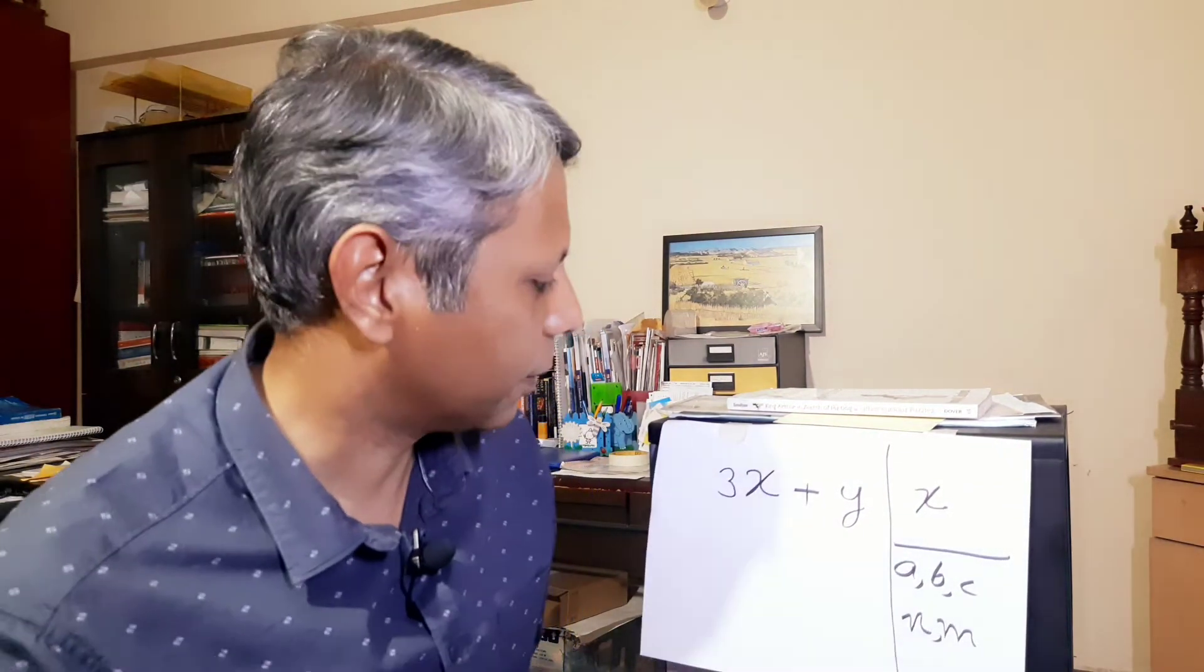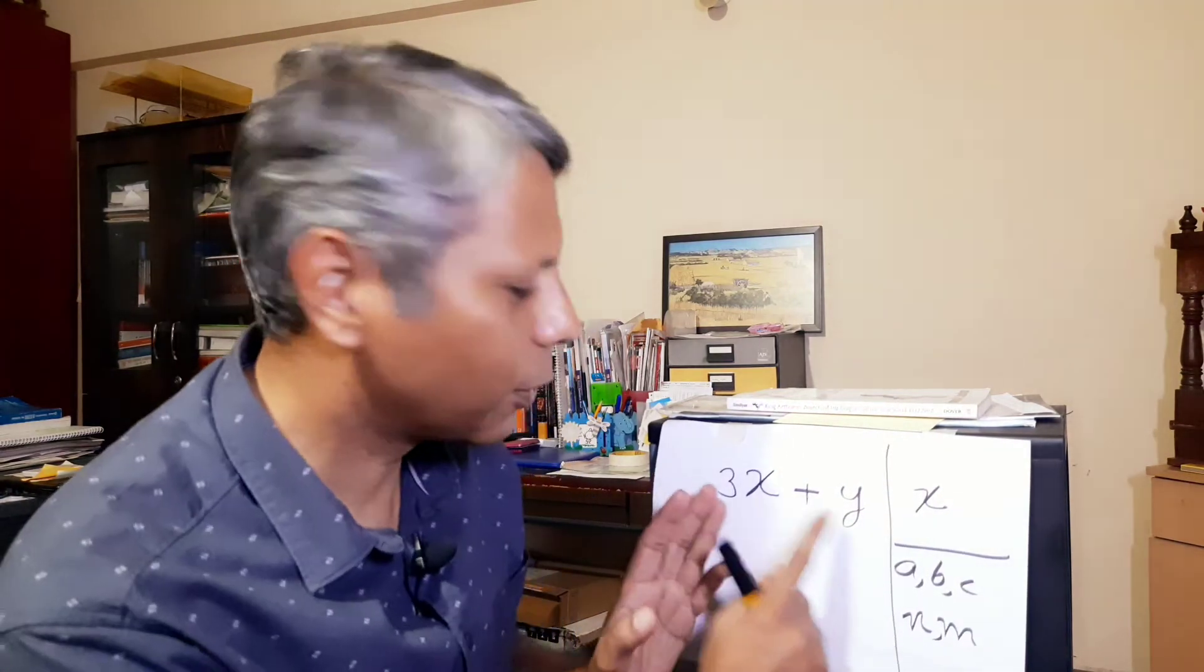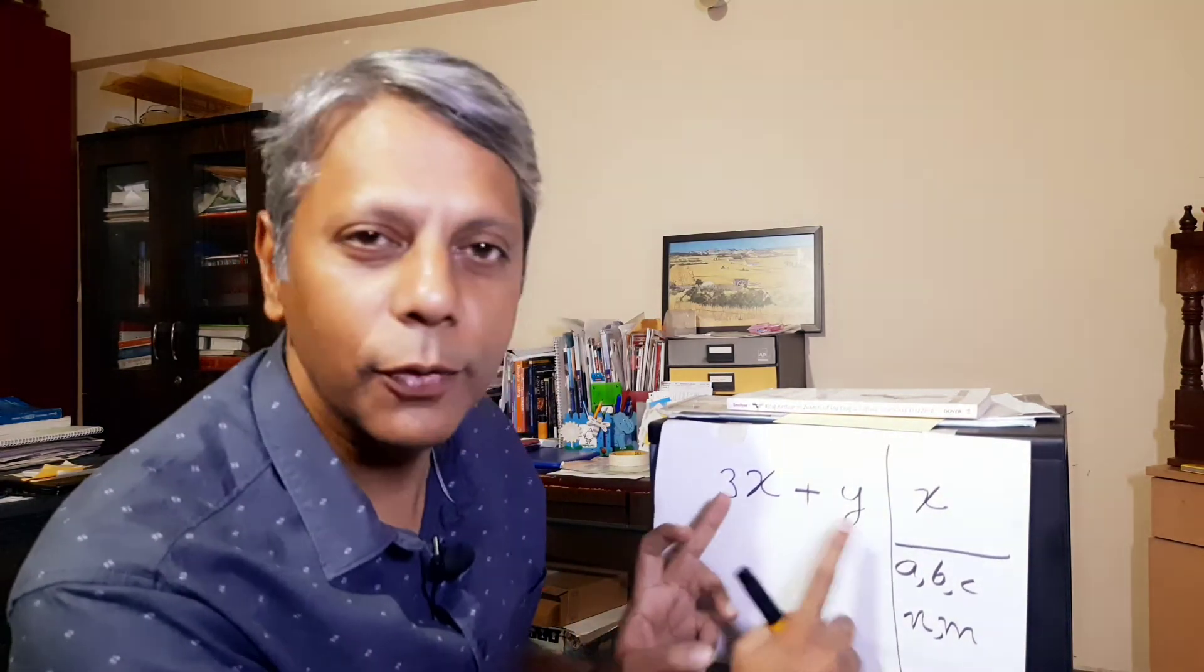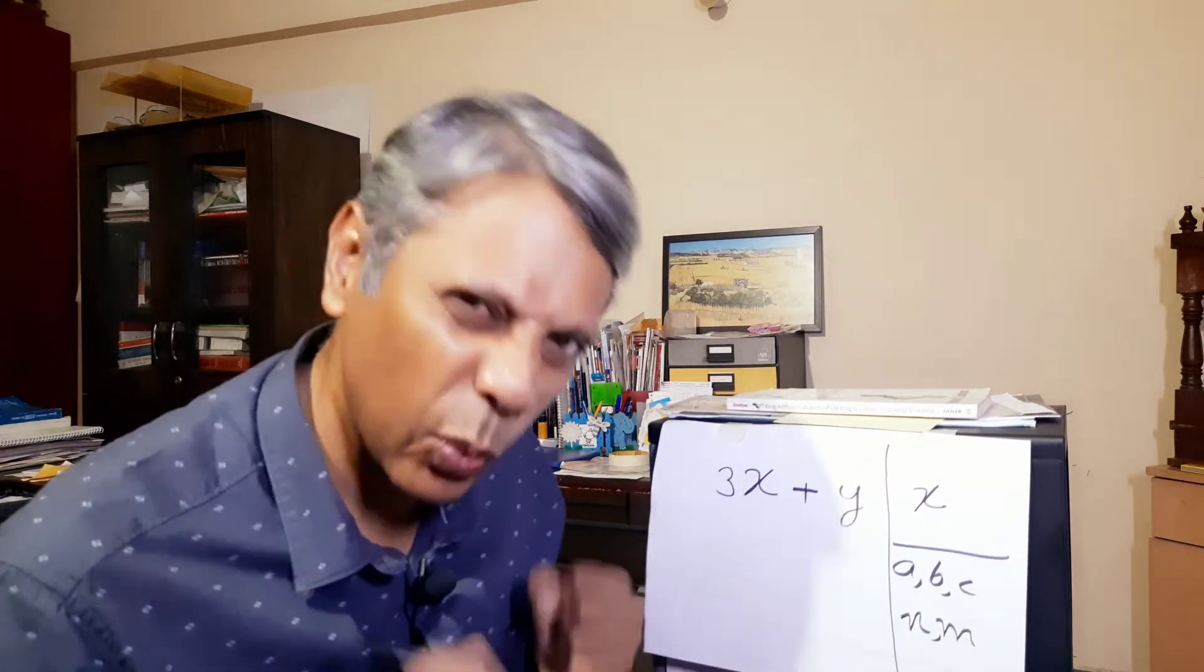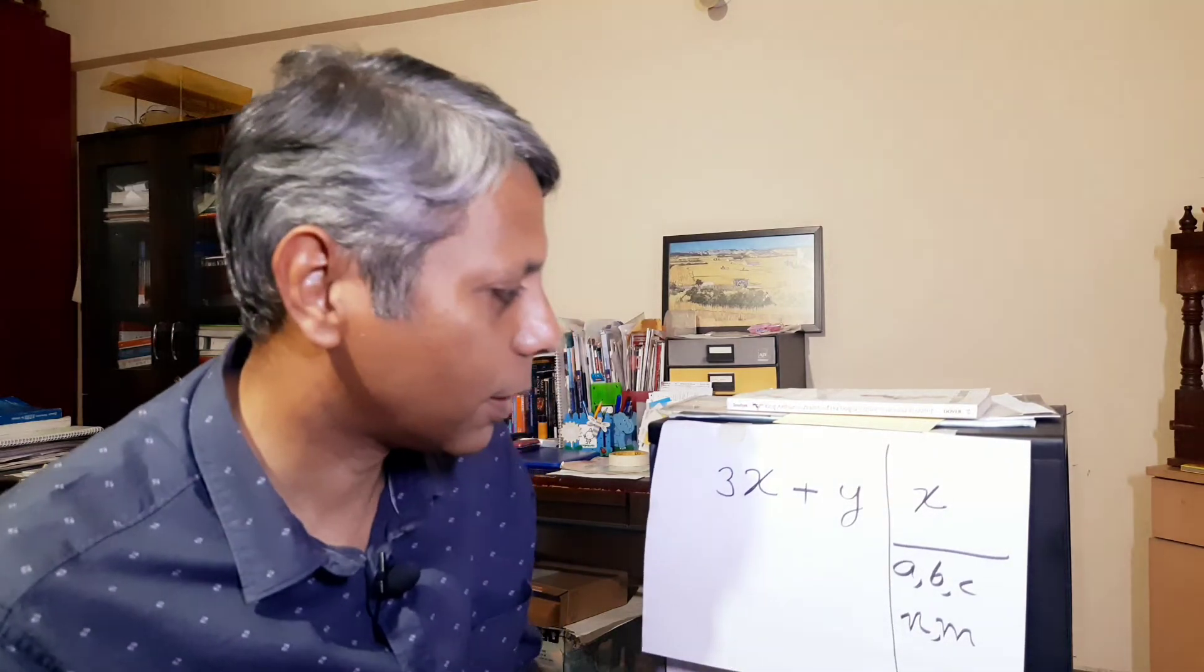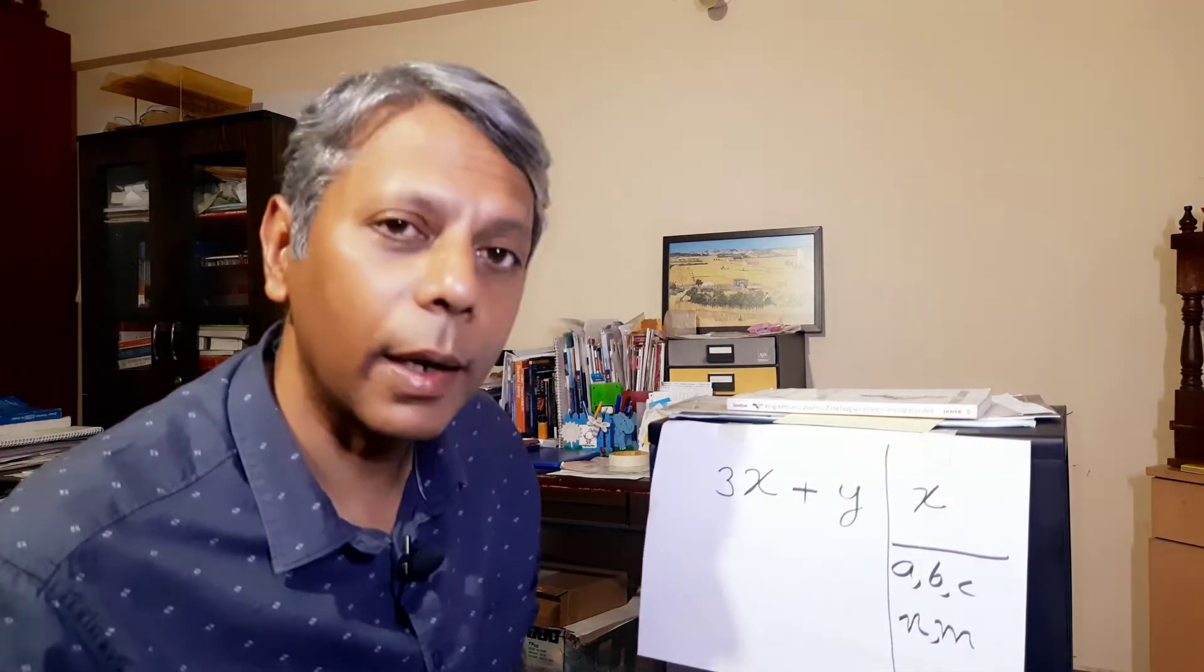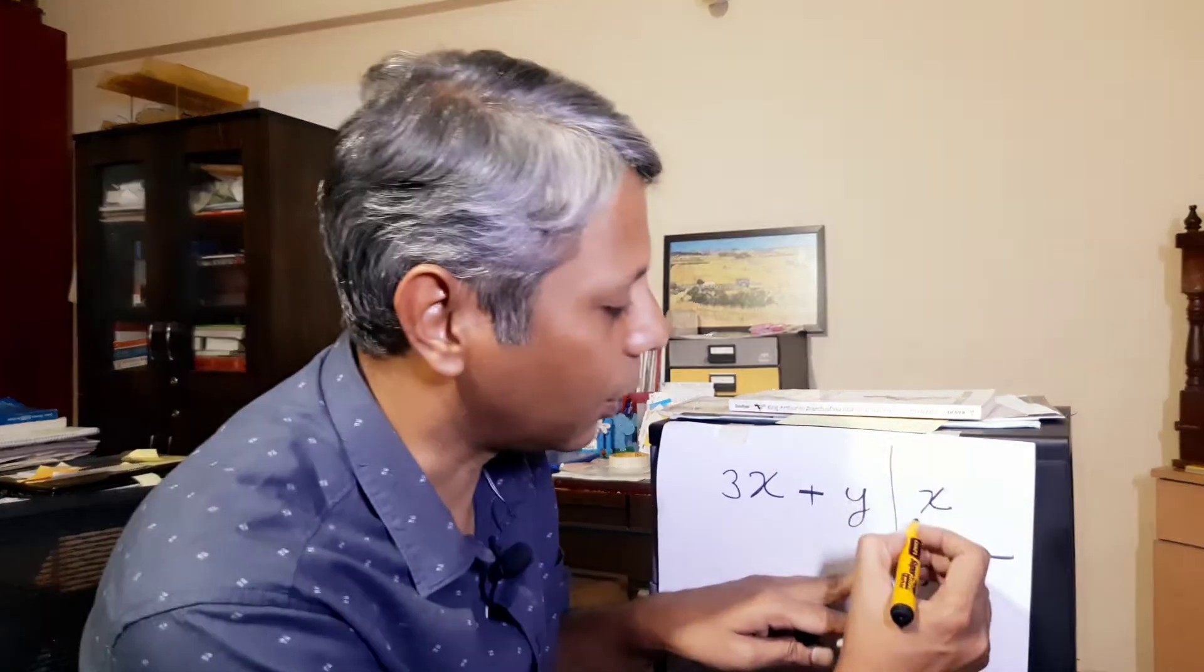Hello, last time you saw a simple algebraic expression 3x plus y and I took two different letters so that you get comfortable quickly. I hope you understood. In that case, x represented number of sheep in a pen and there were three pens, that is three fenced areas for animals in a farm and y represented cows.